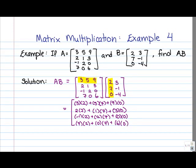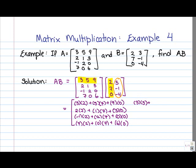In order to find the second column of matrix AB, we first find entry 1, 2. Here we're still dealing with the first row of matrix A, but now we're using the second column of matrix B. So we get 3 times 3 plus 5 times negative 1 plus 9 times negative 4. Going on to entry 2, 2: second row of A times second column of B.